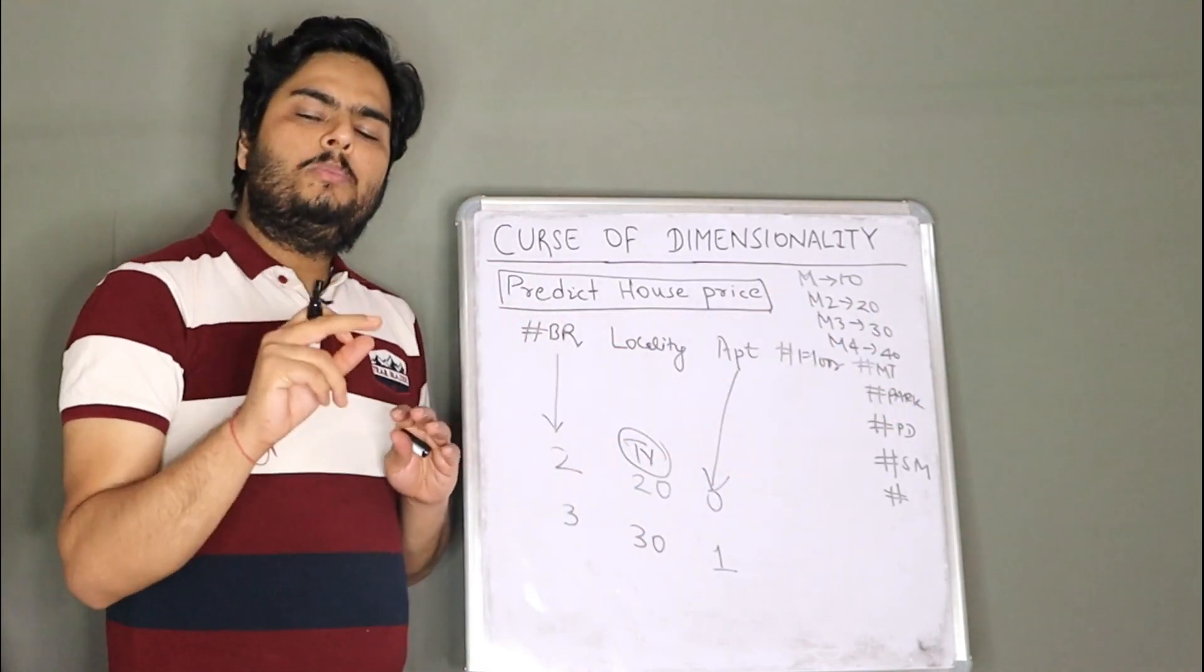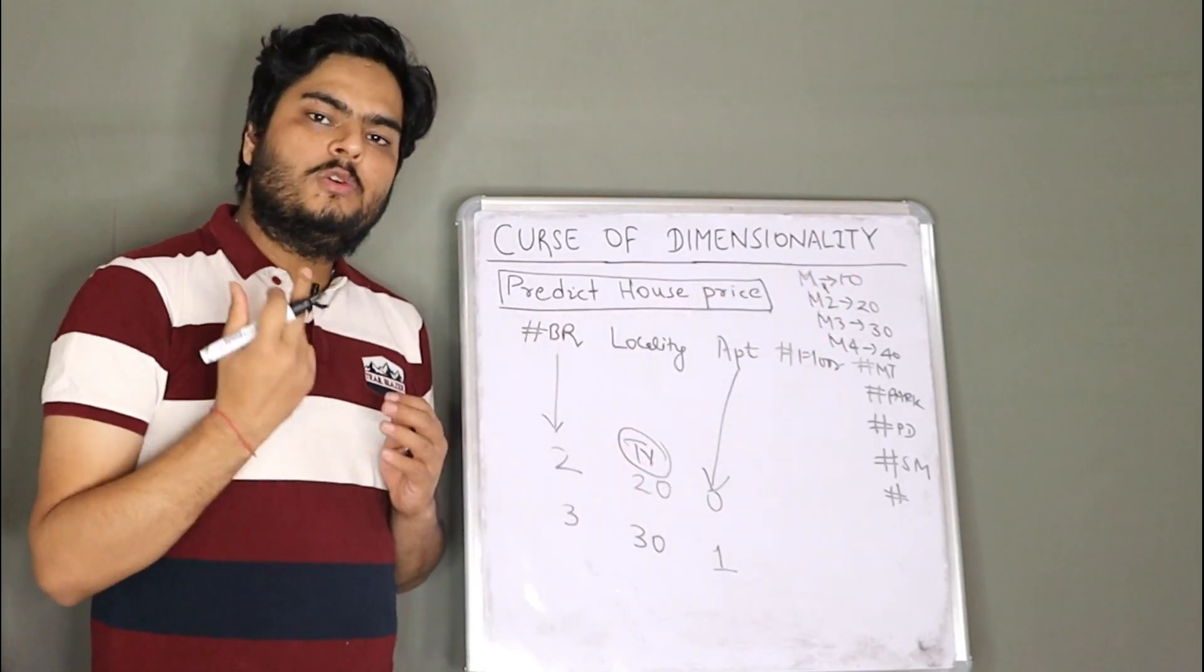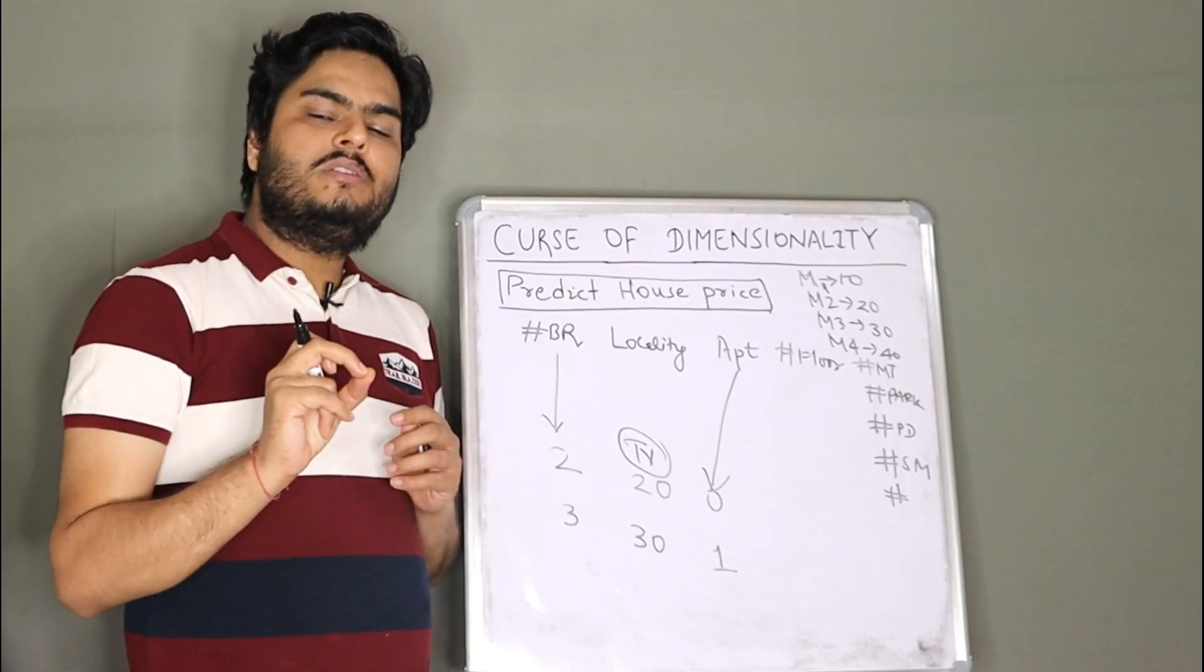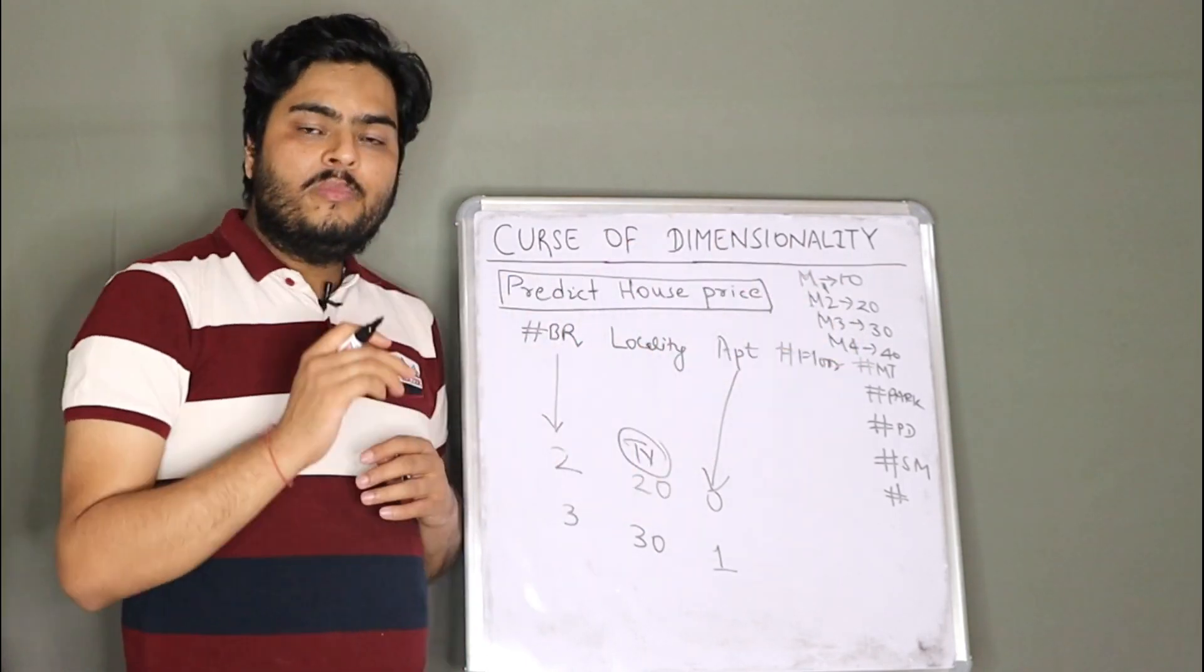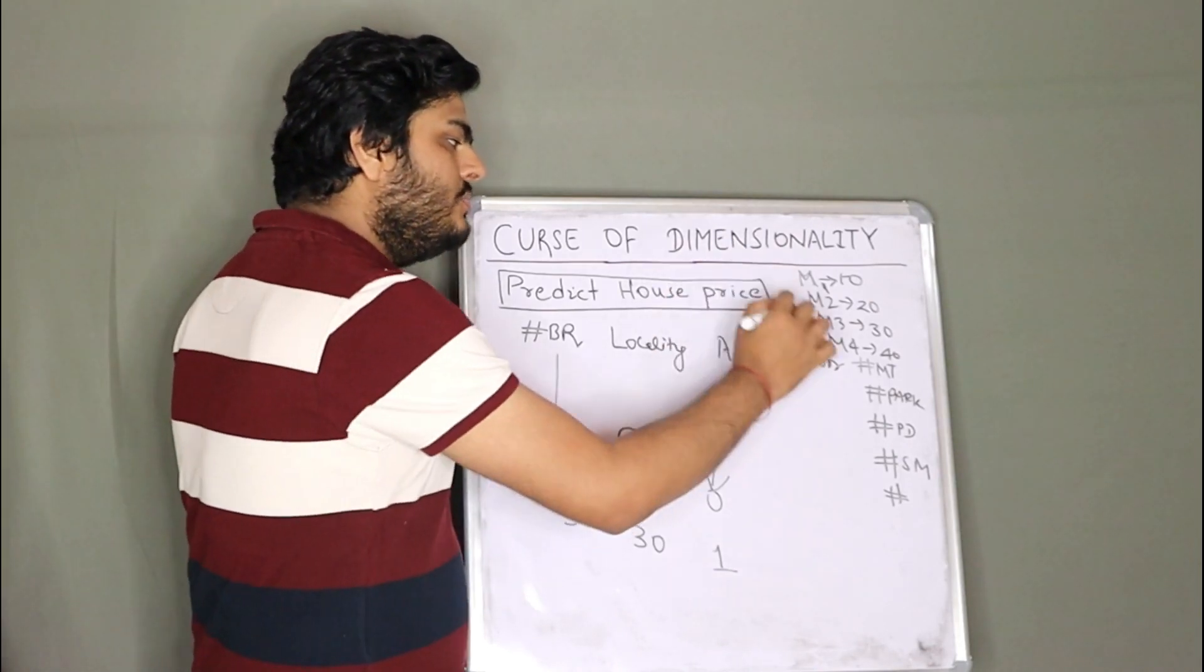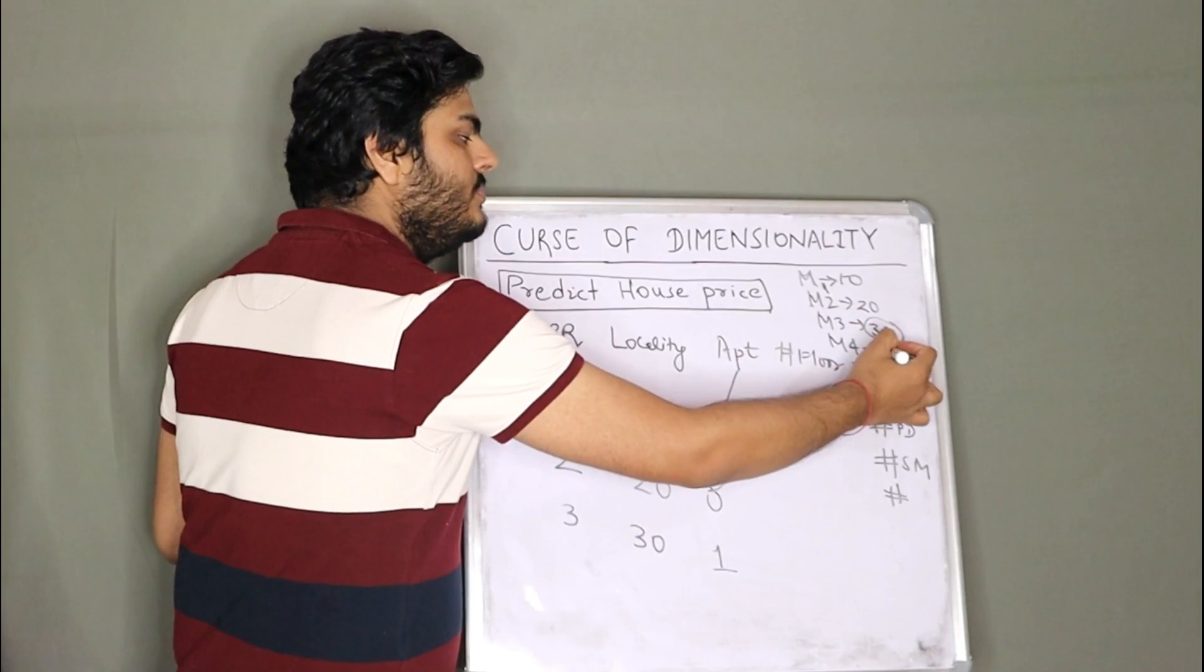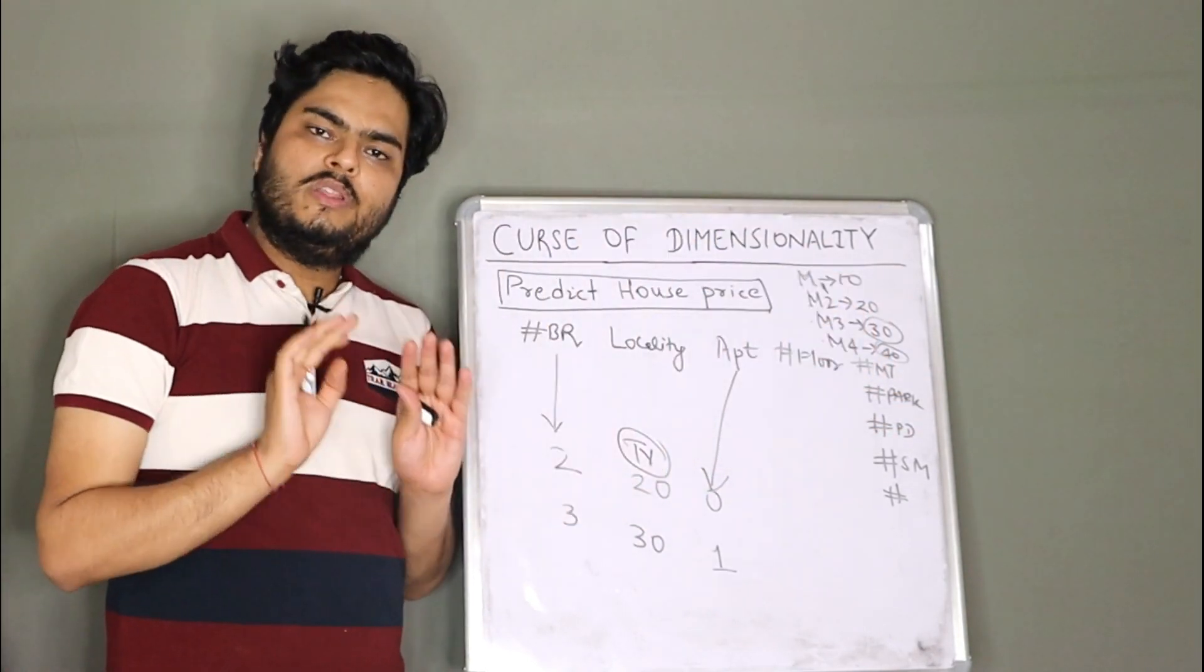So it is quite possible that model one is poor than model two in terms of prediction power. 10 variables is not strong enough for the prediction. Whereas 20 variables is creating lot of difference. So M2 is a better model than M1. But not always true that since we are adding 10 more variables here, so M3 will be a better model than M2. Similarly, since I'm adding 10 more variables here, so M4 will be a better model than M3, not always true.